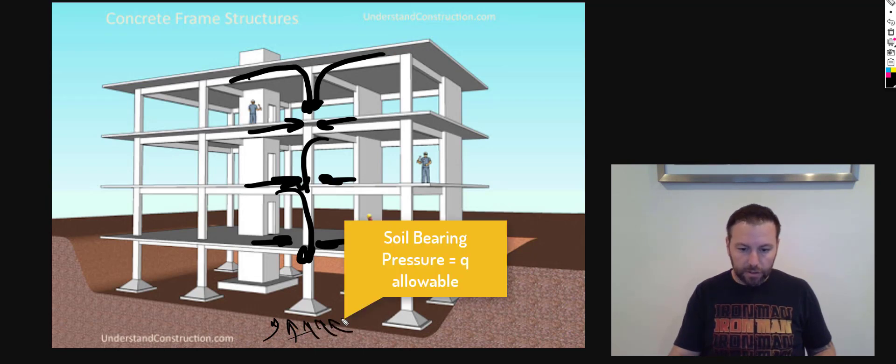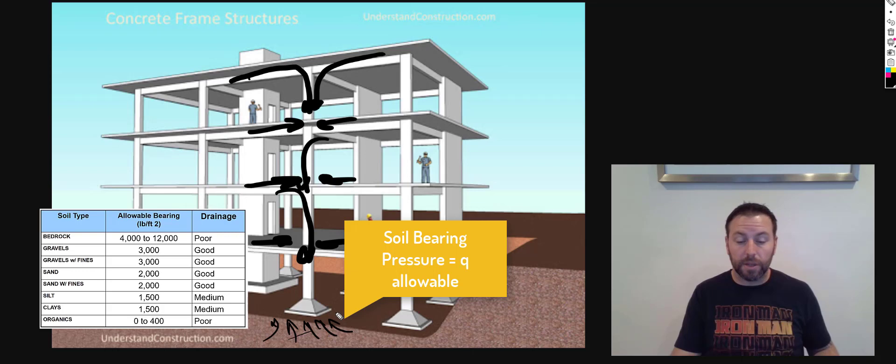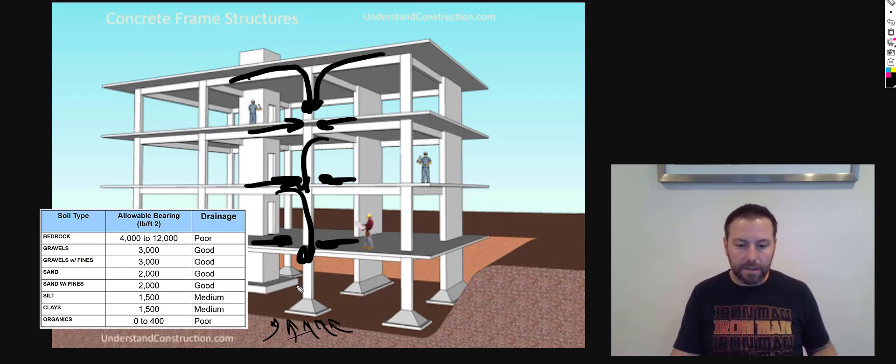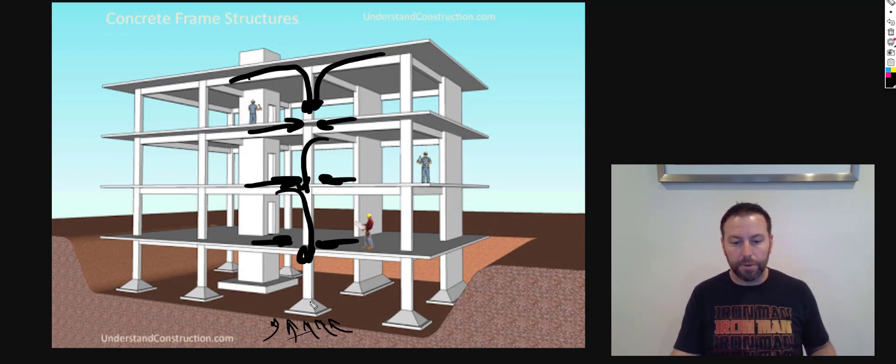And eventually it needs to get supported by the ground underneath. So that is our soil bearing pressure. Different types of soils or different substrates are able to resist that column's force coming down on it a certain amount and support that building.